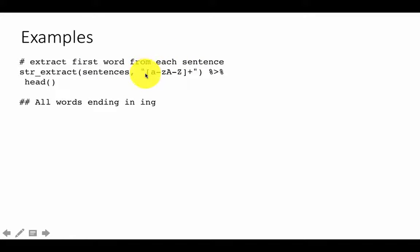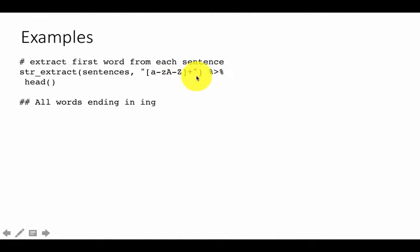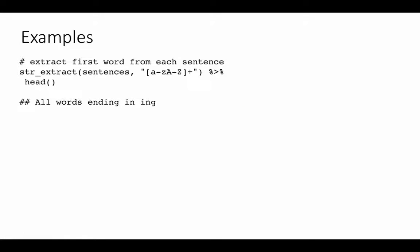The important point to note is that we did not use the anchor at the beginning of the sentence, because it's possible the sentence has some blank spaces before the first word begins. Starting from the first occurrence of any lowercase or uppercase character, we pick out all consecutive occurrences — the word ends when a space appears, stopping the match, and we extract that first word.